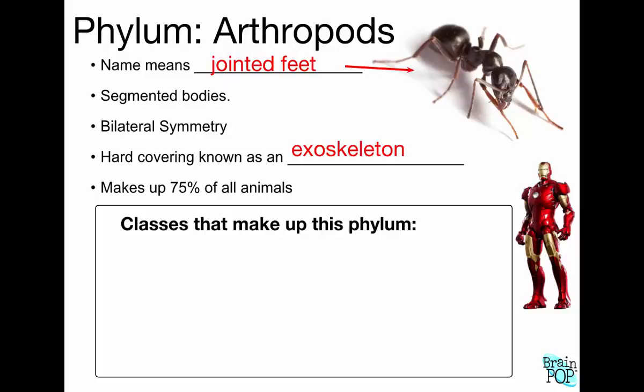The purpose of the exoskeleton is protection against predators and to give the body structure and support — but it also has a downside we'll talk about in a minute. Remarkably, 75% of all animals are arthropods, so they make up a huge percentage. There are many, many types of arthropods.